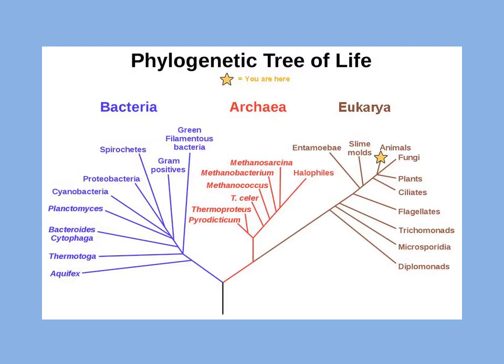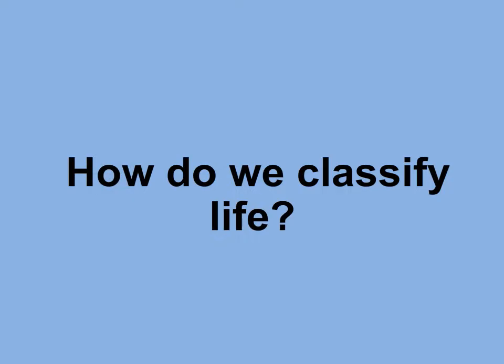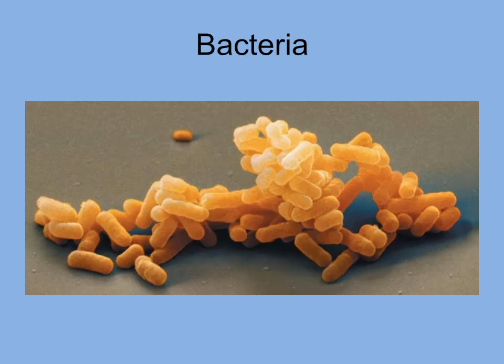Here are the three domains of life: bacteria, archaea, and eukarya. Organisms in the domains bacteria and archaea are composed of prokaryotic cells, while eukarya contains organisms composed of eukaryotic cells. The domain bacteria contains the most diverse array of prokaryotes and are found everywhere — from the icy depths of the ocean to boiling hot springs, from the surface of your skin to the depths of your intestines. A few cause diseases, but most are essential for the rest of life to survive.